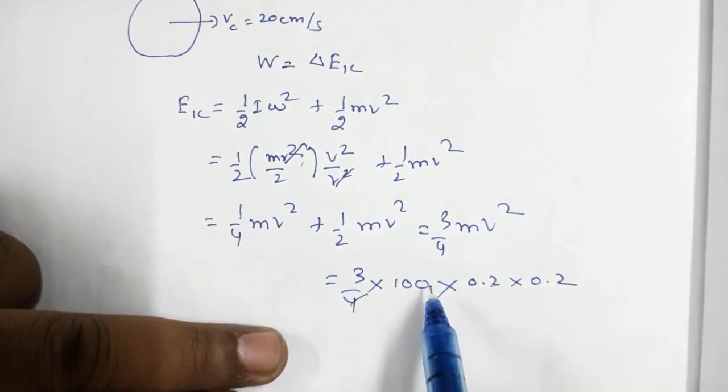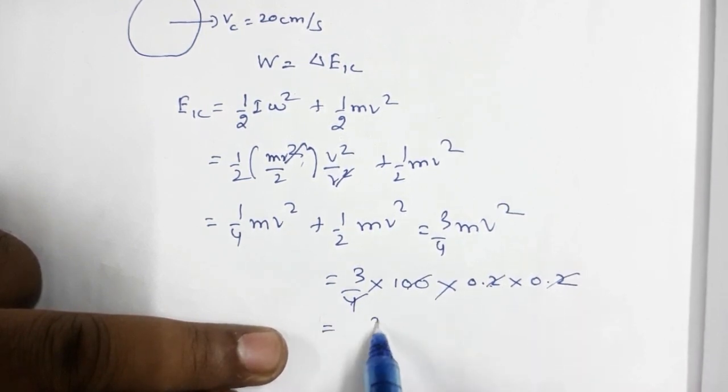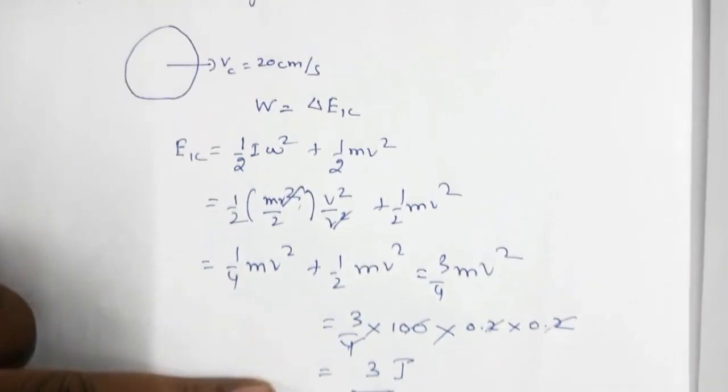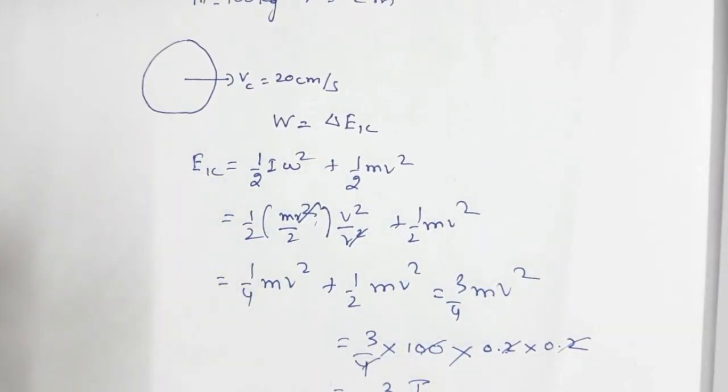So all these quantities cancel out, and this is 3 joules. So 3 joules of work is done to stop this disk.